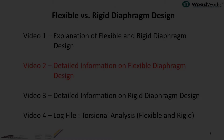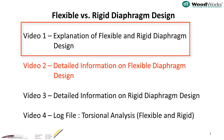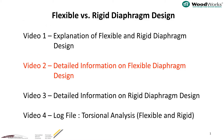In the previous training video, the difference between flexible and rigid diaphragm distribution assumptions was demonstrated. We showed that depending on the wall configuration, it would be prudent to run the analysis for a worst-case scenario with both flexible and rigid diaphragm assumptions. We also discussed that some codes and standards in Canada and the US do permit designers to assume flexible diaphragm distribution only.